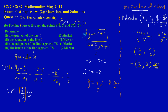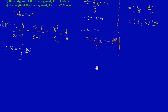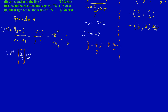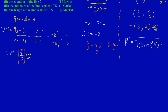In part 4, they're asking us to find the length of the line segment TS. The length of a line is based on the Pythagorean theorem concept. The formula is: length = √[(x₂ - x₁)² + (y₂ - y₁)²]. Substituting our values: x₂ = 0, x₁ = 6, y₂ = -2, y₁ = 6.